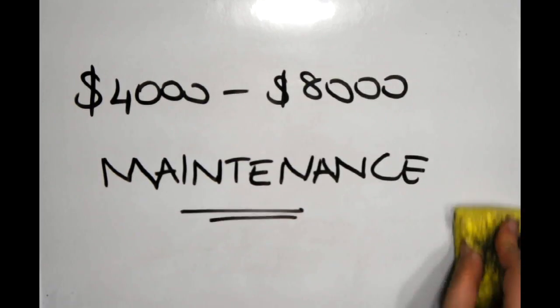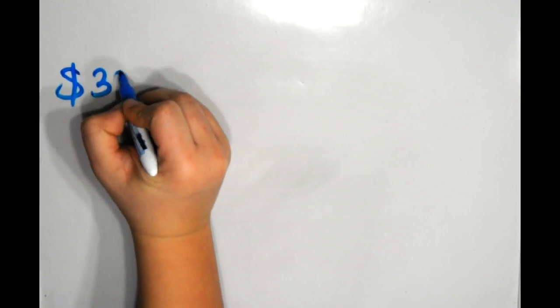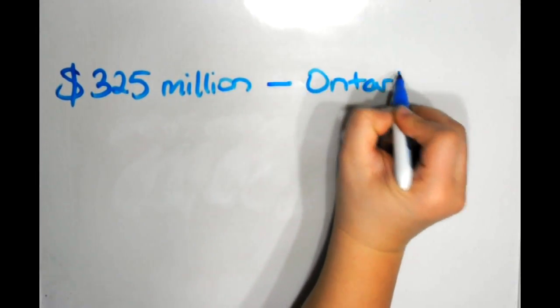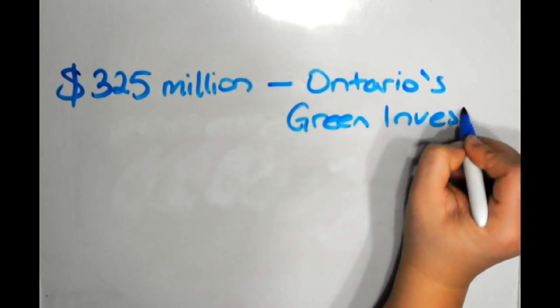The government of Ontario has launched a fund called Ontario's Green Investment Fund, which has awarded $325 million to green energy projects, including solar power.